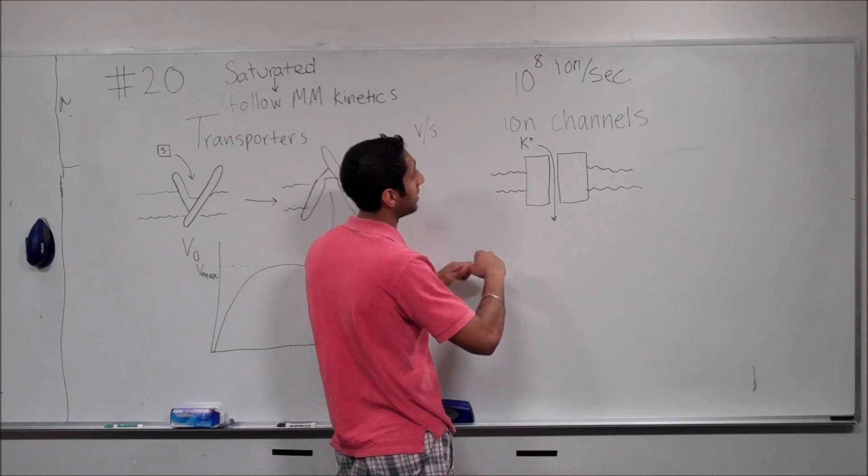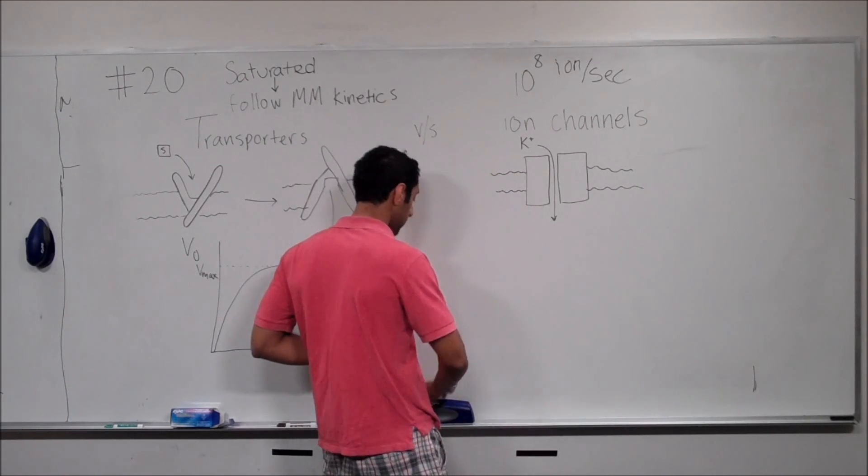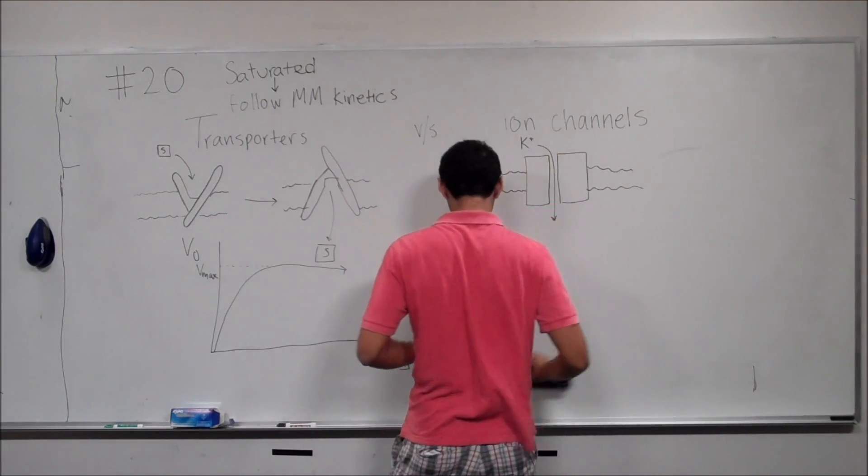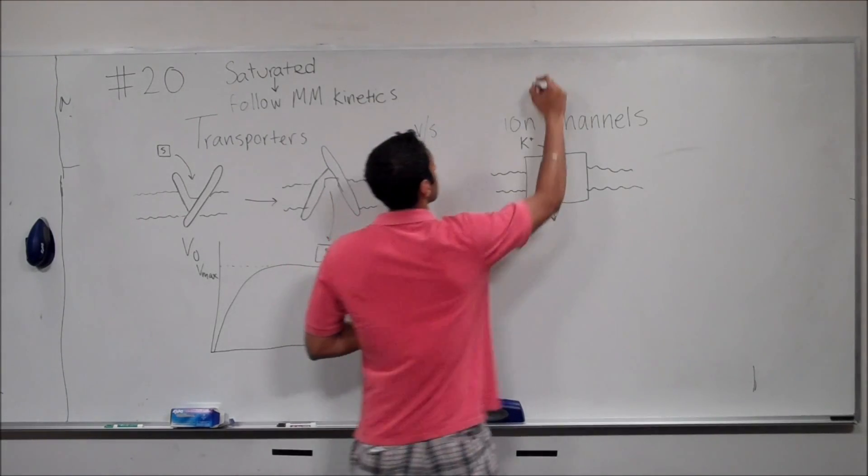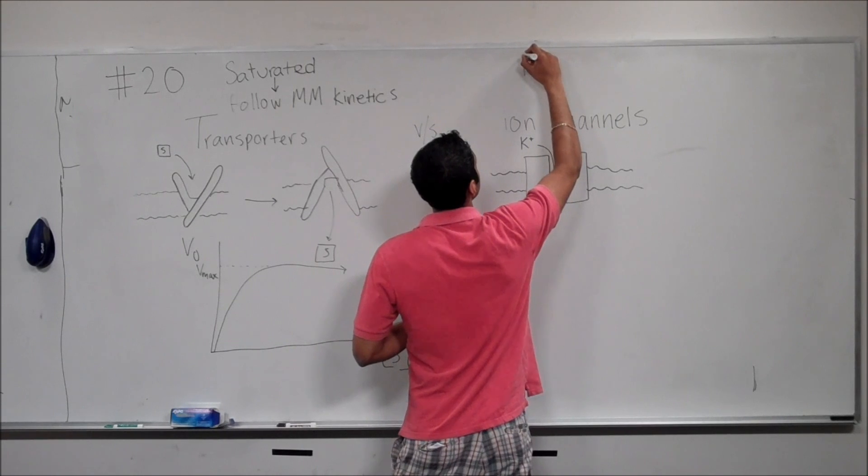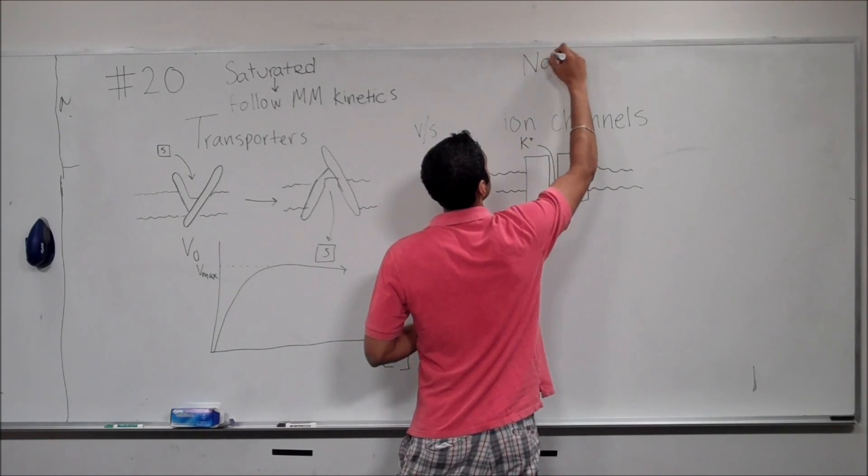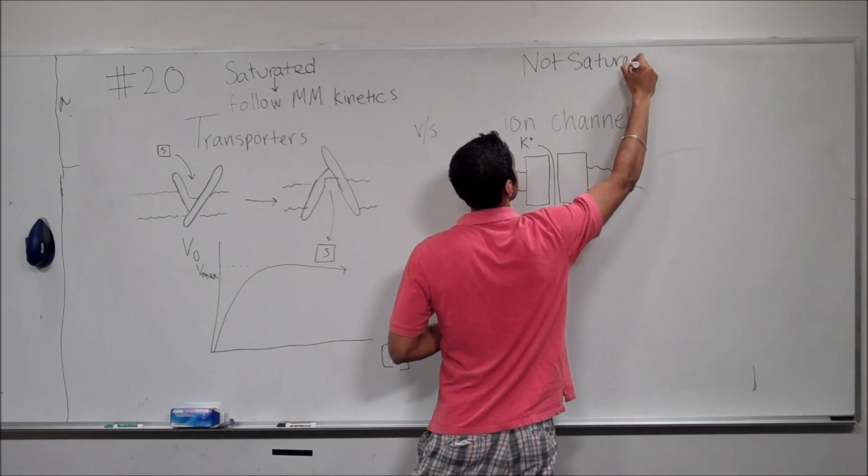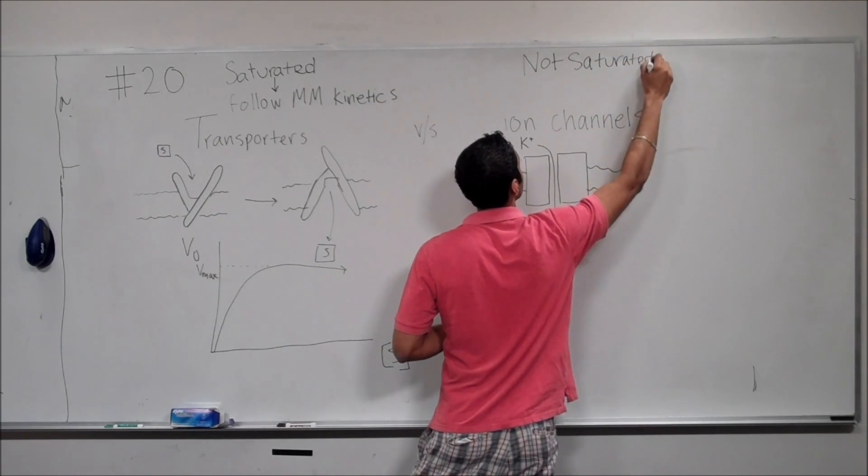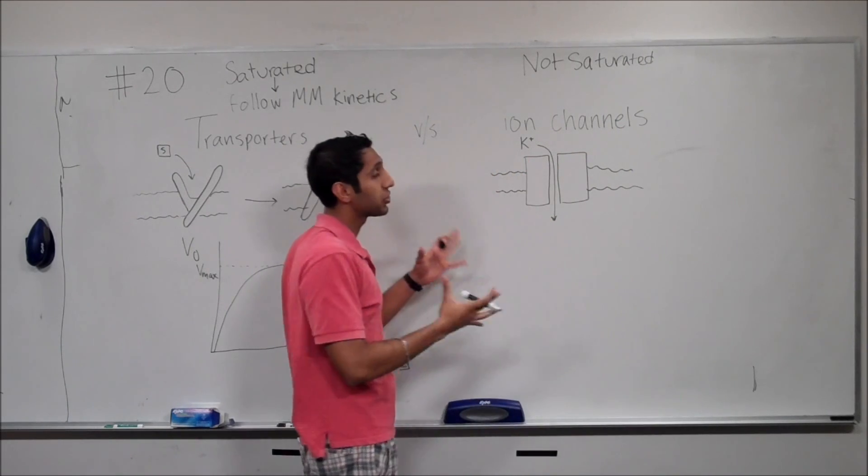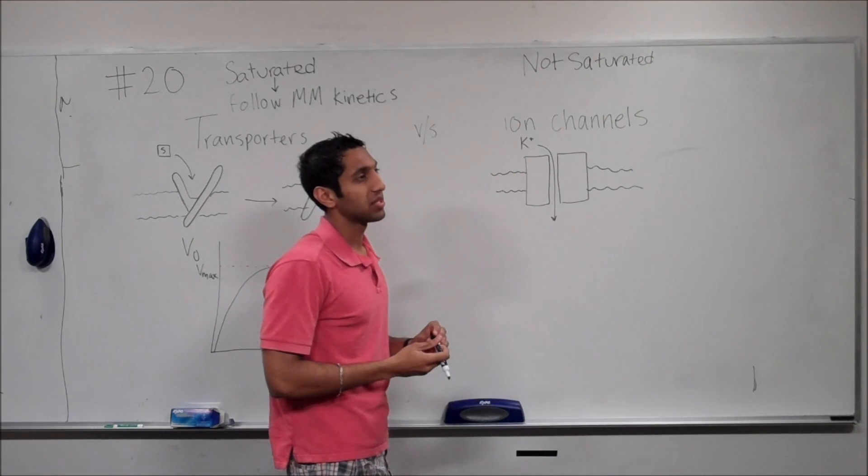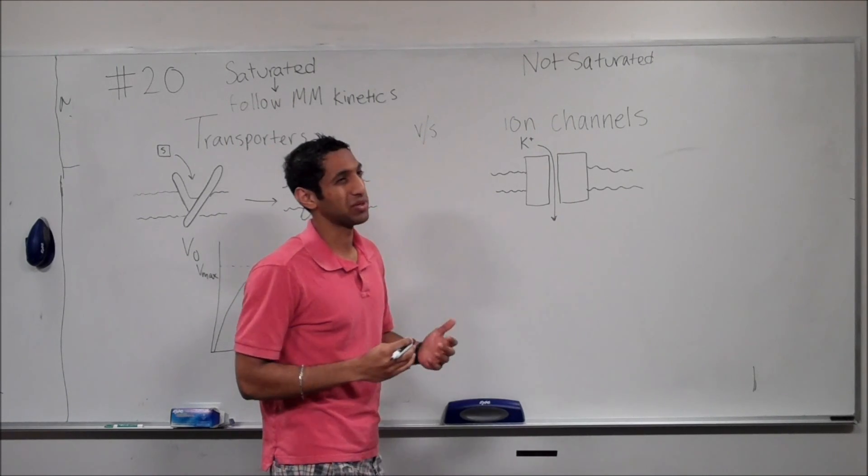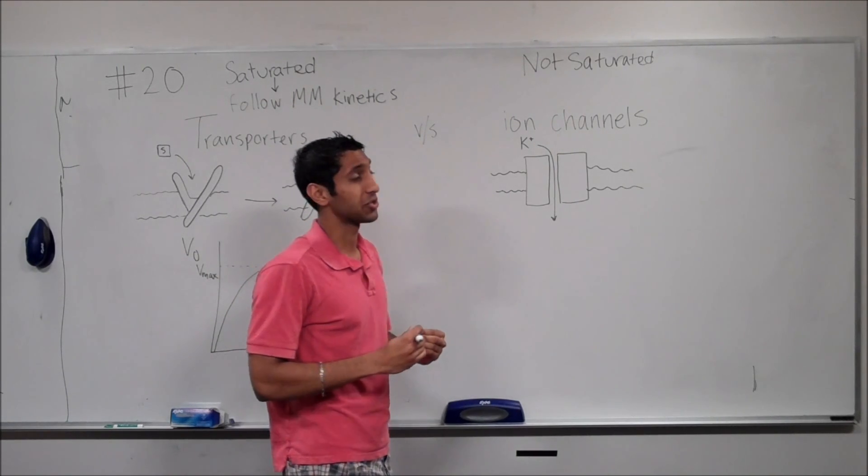So, as you can imagine, ion channels never get saturated. So, quickly erasing this, they do not get saturated. Not saturated. Of course, like any physical channel, it could get saturated. But the level of concentrations that cells normally have to deal with, it's not typical for ion channels to reach saturation points.